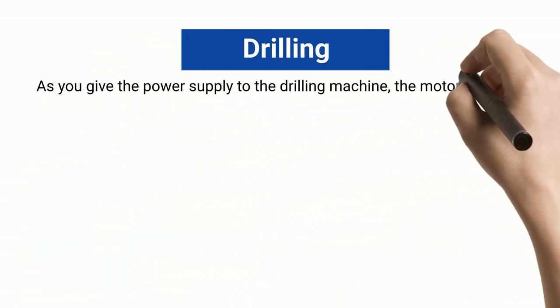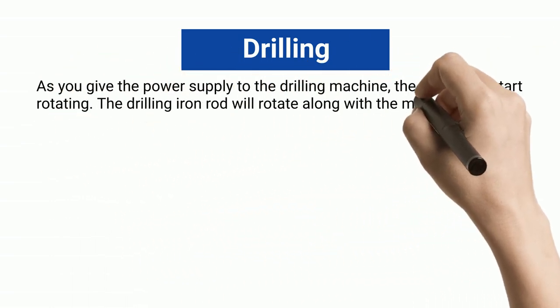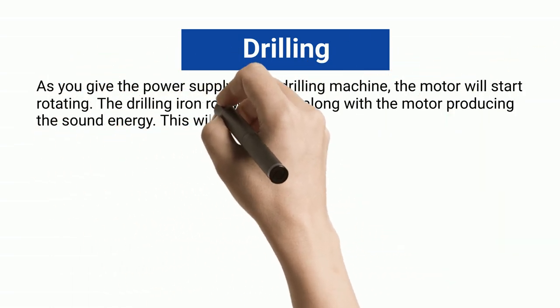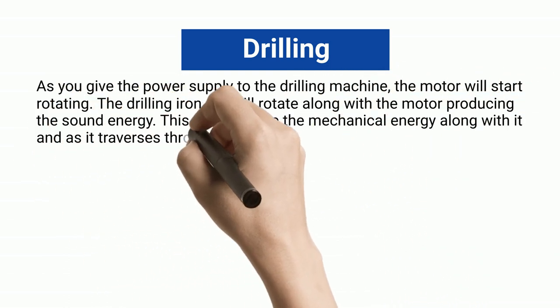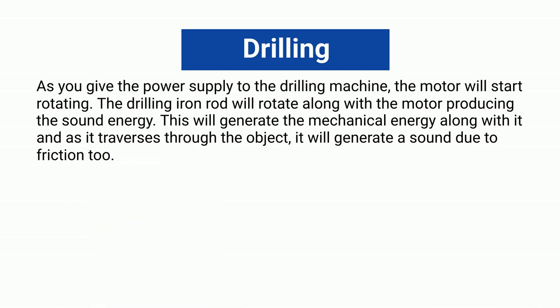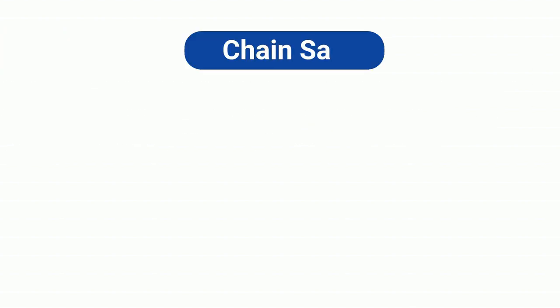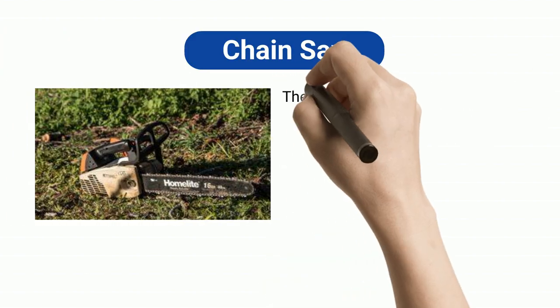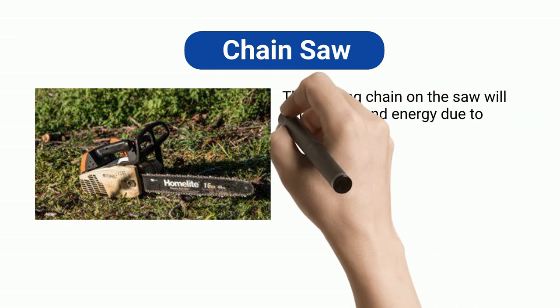Drilling: As you supply power to the drilling machine, the motor starts rotating. The drilling iron rod rotates along with the motor, producing sound energy. This also generates mechanical energy, and as it traverses through the object, it generates sound due to friction too.